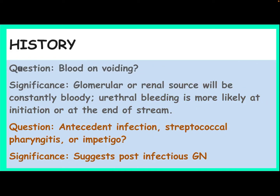History questions: Regarding blood on voiding — a significant glomerular or renal source will be constantly bloody, while urethral bleeding is more likely at the initiation or at the end of the stream. Ask about antecedent infections — streptococcal pharyngitis or impetigo — which are significant as they suggest post-infectious glomerulonephritis.